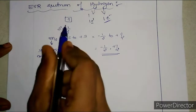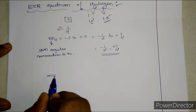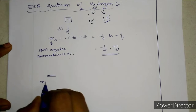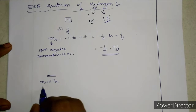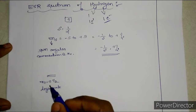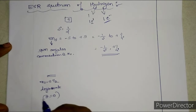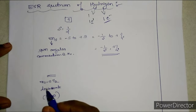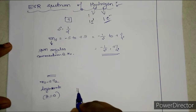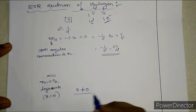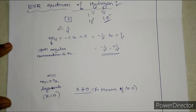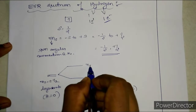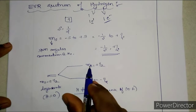Now I will represent the energy level diagram for hydrogen. There are two MS values — one is plus 1/2 and the other is minus 1/2, so MS = ±1/2. In the absence of a magnetic field, these two levels will be degenerate, meaning the energy of both levels is the same when H = 0. But if we apply a magnetic field — that is, H ≠ 0 — these two MS levels will split into two levels: one is MS = minus 1/2 and the other is MS = plus 1/2.